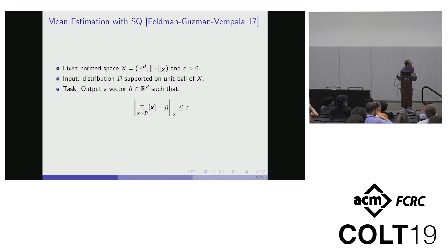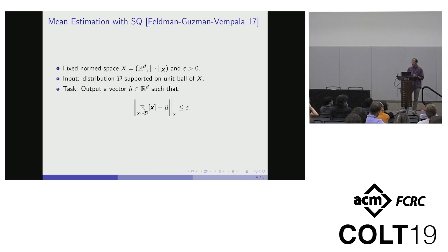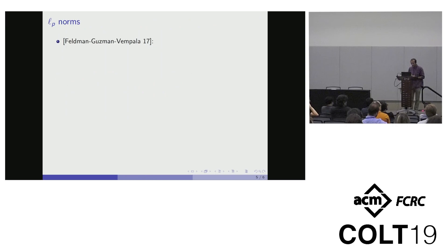The problem we'll focus on is the basic problem of mean estimation. We fix a particular norm space X over R^d and some epsilon greater than zero, and we get access to a distribution D supported on the unit ball of the norm space — high-dimensional vectors whose norm in X is at most one. We want to output an estimate of the mean: a vector mu-hat such that the norm in X between mu-hat and the mean of the distribution is at most epsilon.